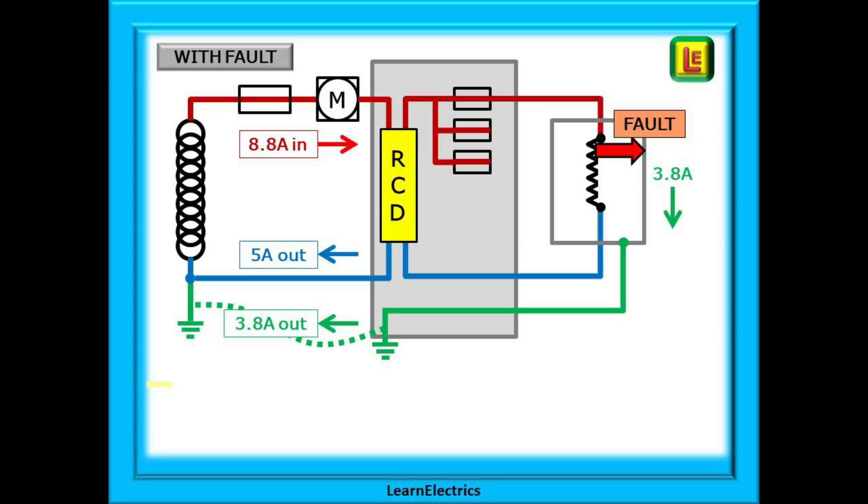This is 8.8 amps flowing along the line conductor but look what happens to the returning current. They split. 5 amps along the neutral and 3.8 amps through the earth. This means that there is an imbalance between the line and neutral. The currents are no longer equal. Is the current difference greater than 30 milliamps or 0.03 amps? Yes, of course it is. It's almost 4 amps difference and so the RCD will trip and disconnect the supply.